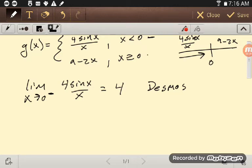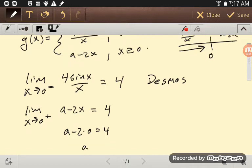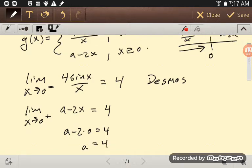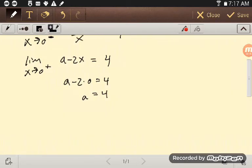And so what that means is I need the limit as x goes to zero from the right of a minus 2x to equal four. Well, if I use direct substitution, I would have a minus 2 times zero has to be four. So a has to be four.